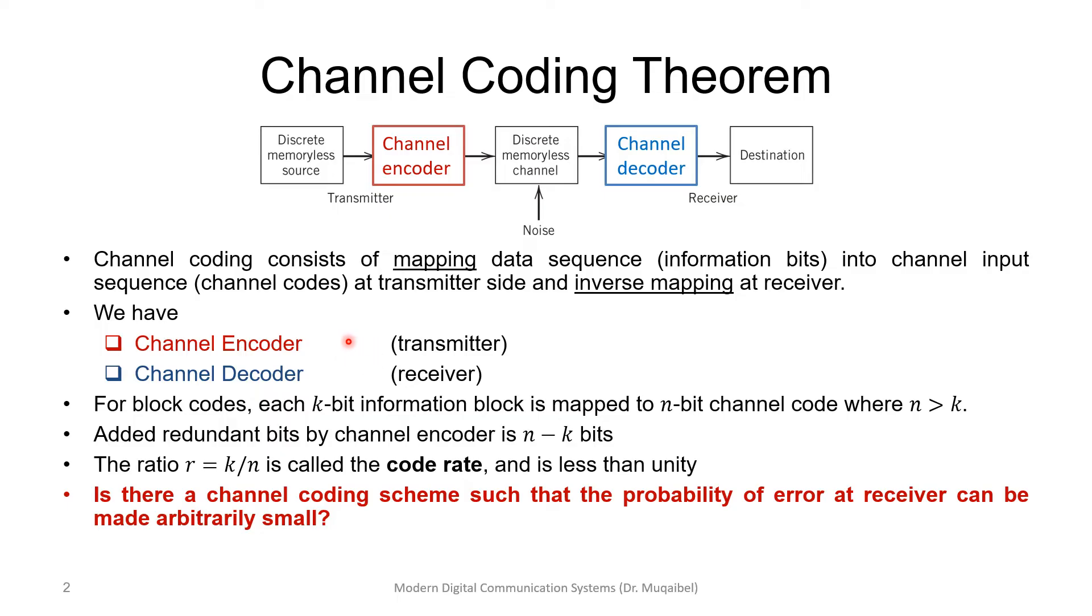We encode to match the channel, hence the name channel coding. For block codes, each k-bit information block is mapped into an n-bit channel code. We start with k bits and map it into n bits.